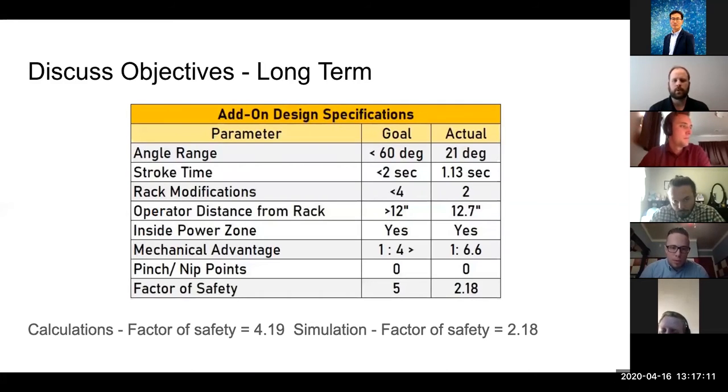For the long-term design specifications, we achieved all of our goals about one. We were able to get the stroke time to be about a second. The angle range of the mechanism to be less than 60. The rack modifications, we were looking to be less than four and we were able to achieve two. Also the operator distance from the rack to help them avoid falling anodes. We needed it to be greater than 12 inches and we were able to accomplish that as well. Along with a mechanical advantage ratio of one to 6.6, which is really good. The only thing that we didn't meet was the factor of safety based on our current models.